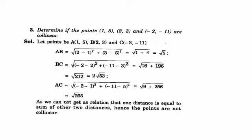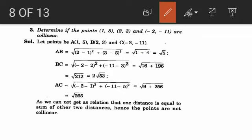Next example: determine if the points (1,5), (2,3), and (−2,11) are collinear. Find AB = √5, BC = 2√53, and AC = √265. In this case AB + BC is not equal to AC — the sum of two sides is not equal to the third side. Therefore the points are non-collinear.